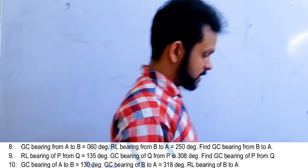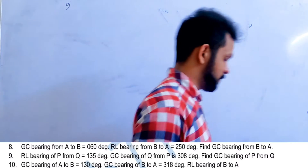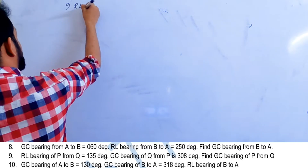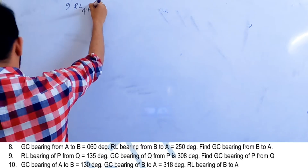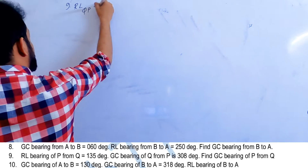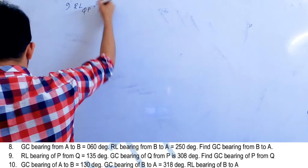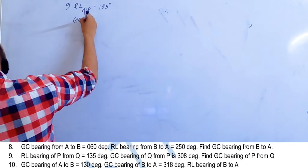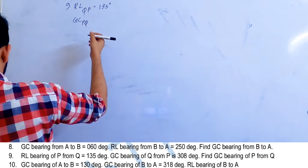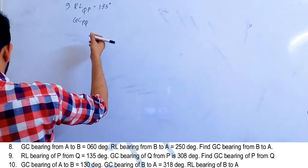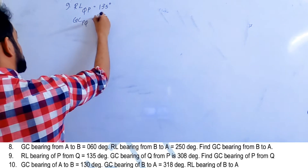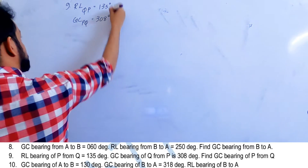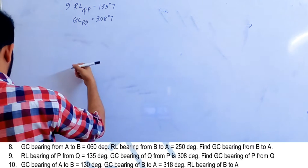Question number 9. Rhumb line bearing of P from Q — the rhumb line bearing of QP is 135 degrees. Great circle bearing of Q from P is 308 degrees. We have to find the great circle track of QP.